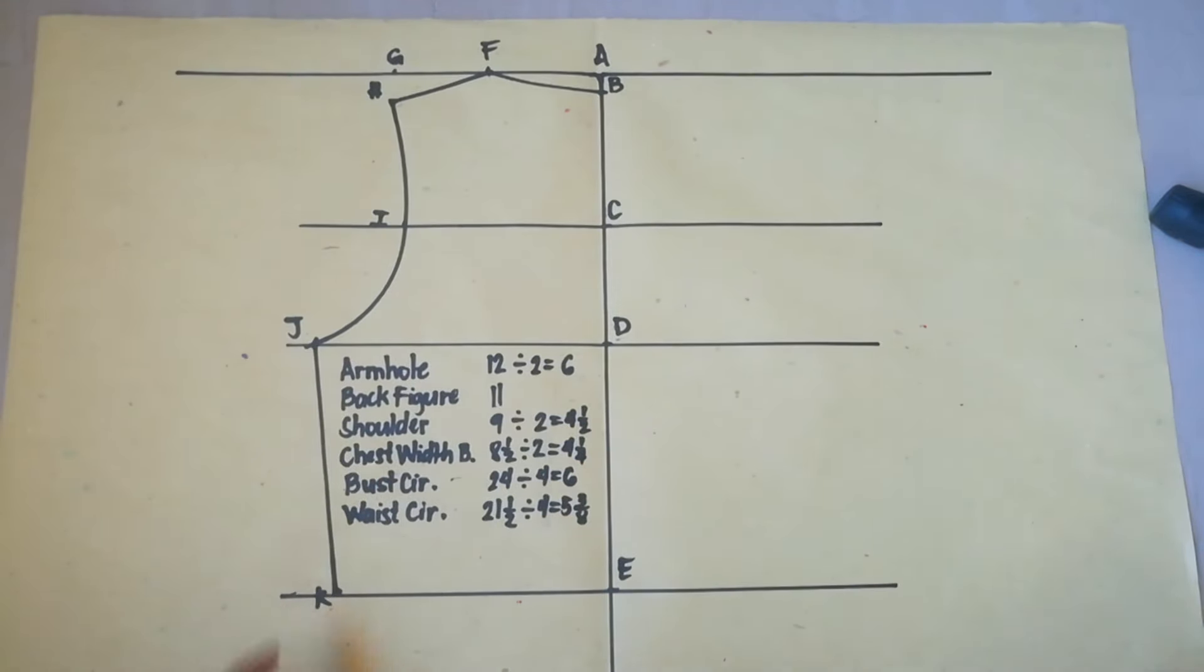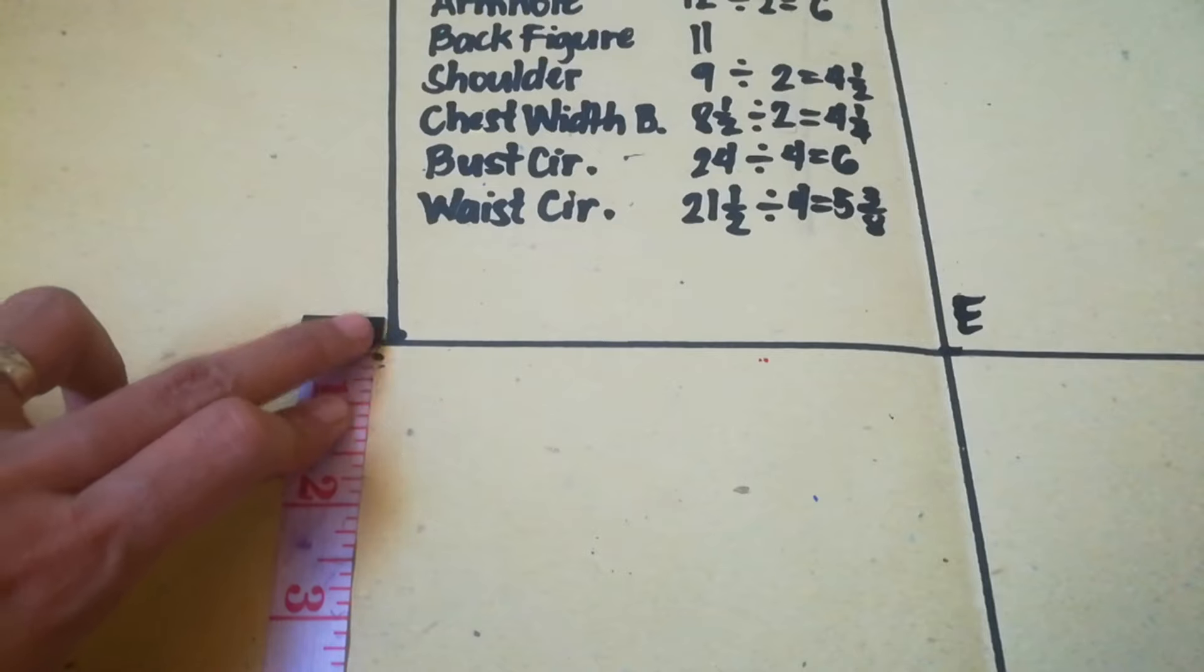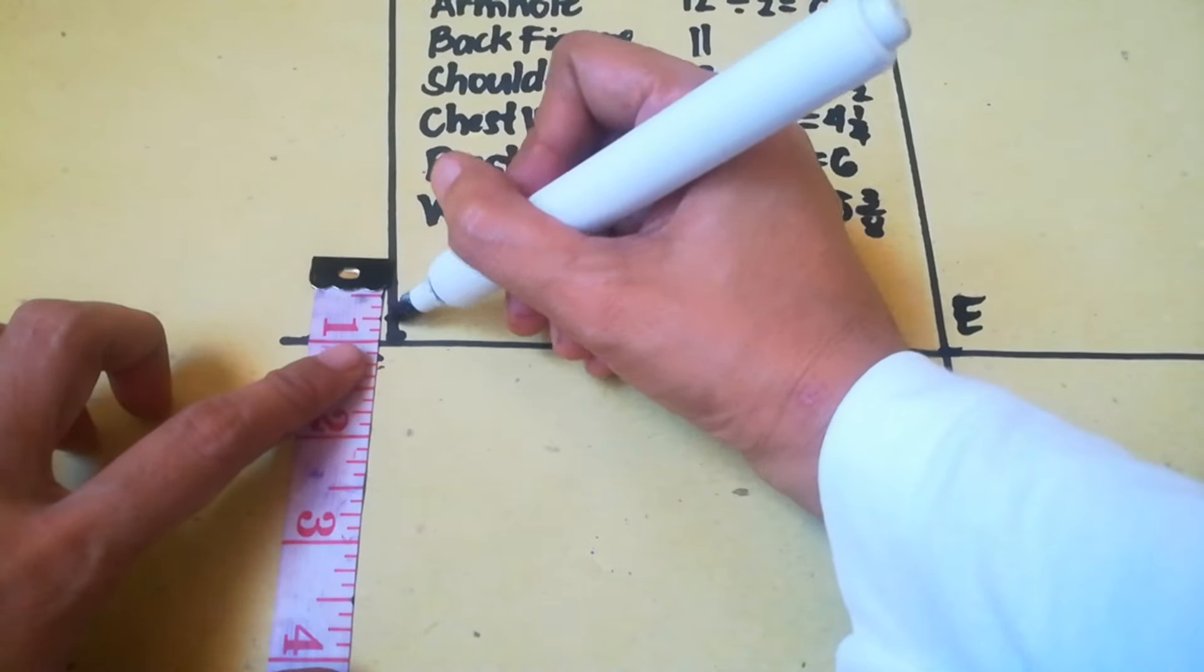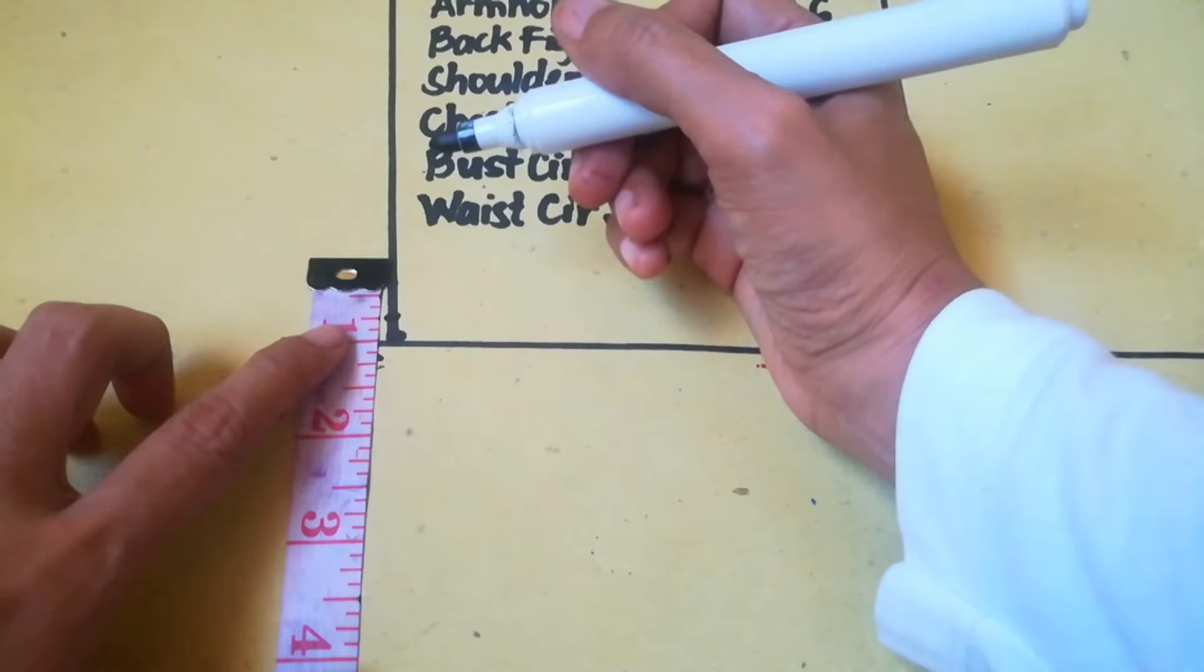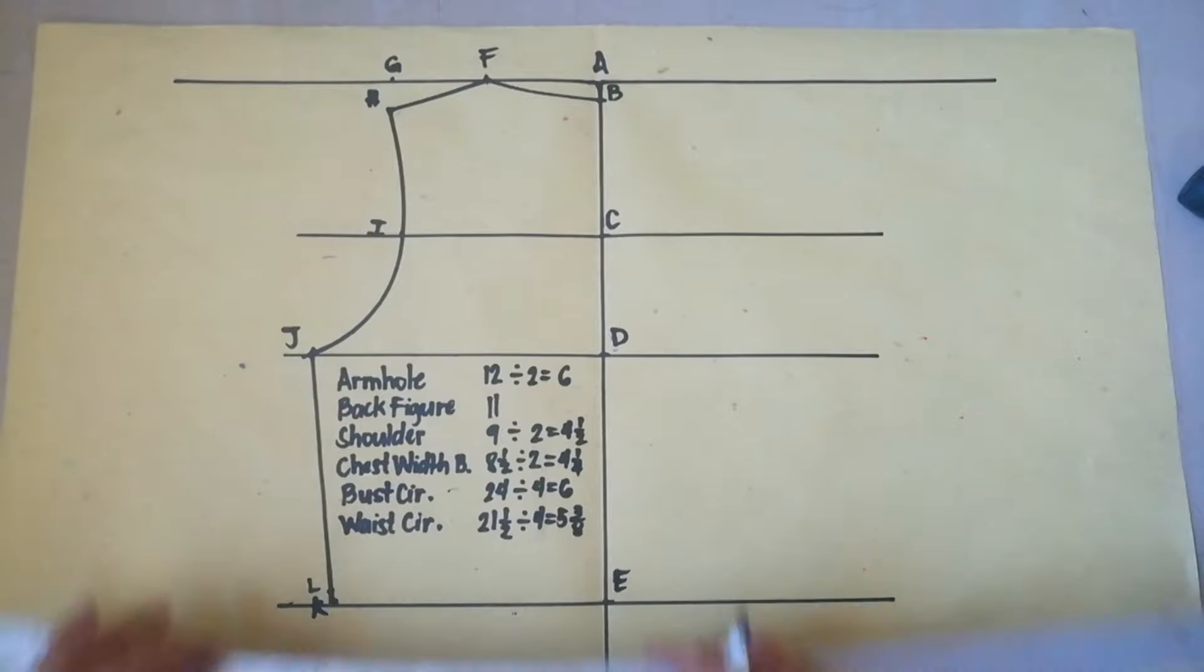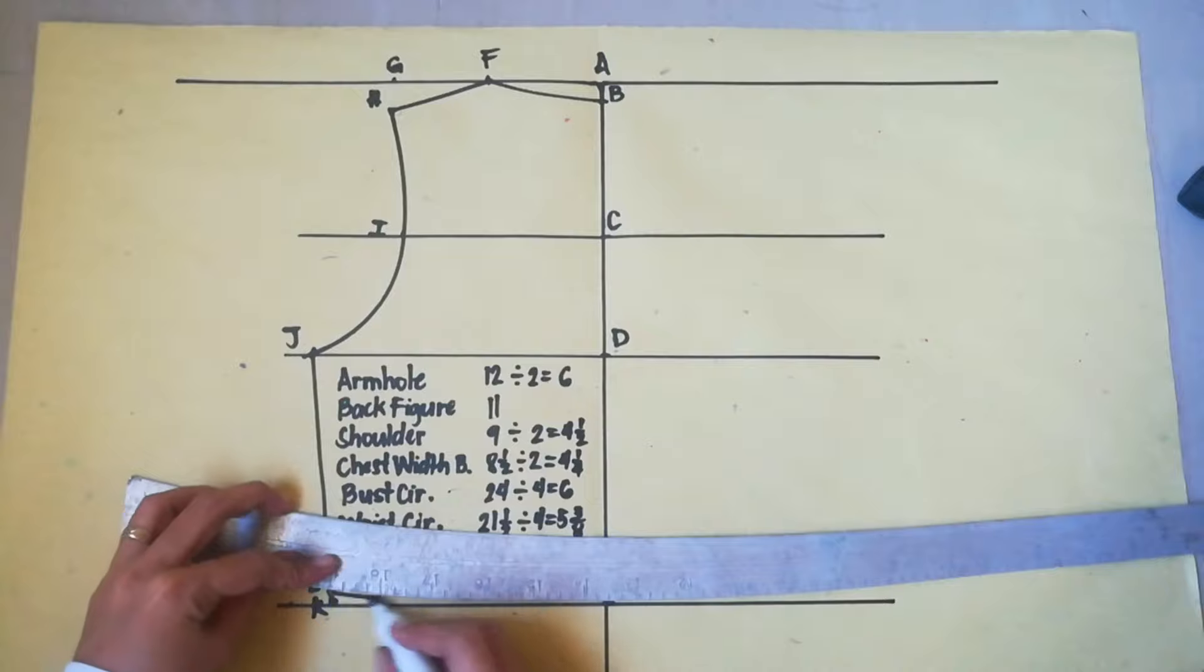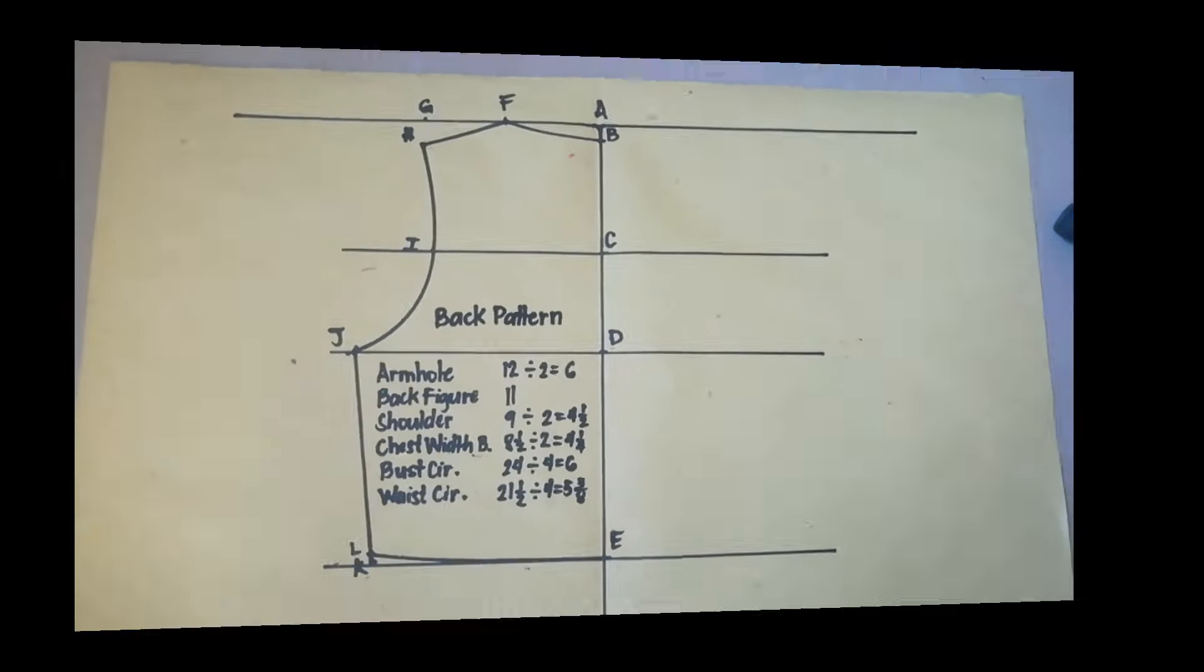Now, from K, measure 1 fourth inch upward. So, I cannot see the 1 fourth in the tape measure because of this metal, so I am going to measure from this line. So, this is the 1 fourth of an inch. So, this is point L. And connect L to E with slight curve. This is now the back pattern for children's wear.